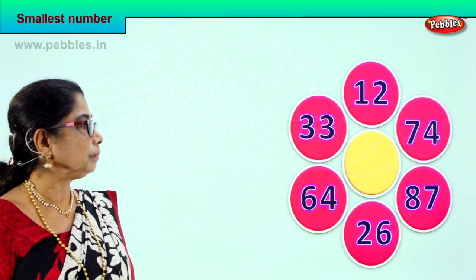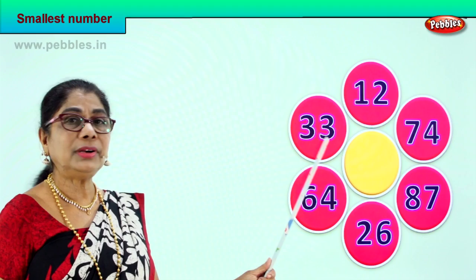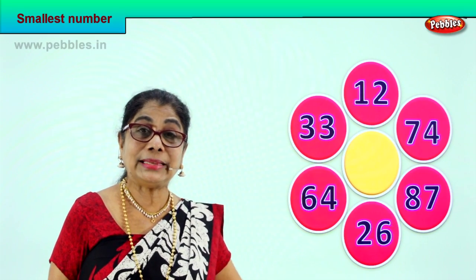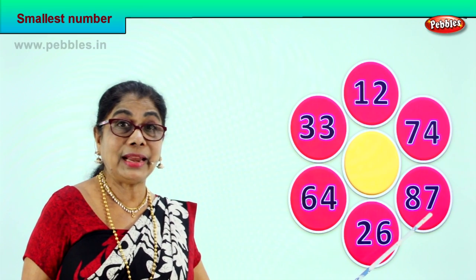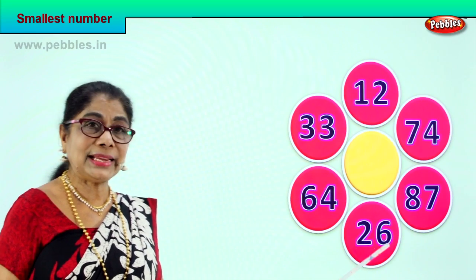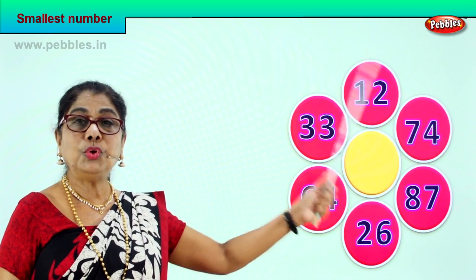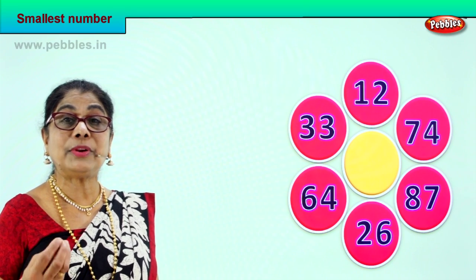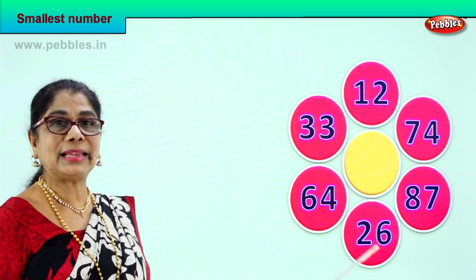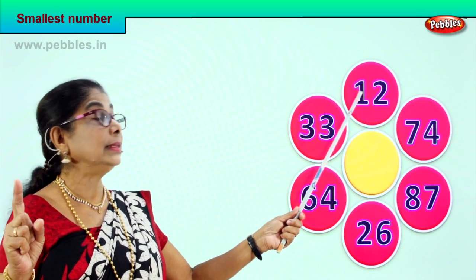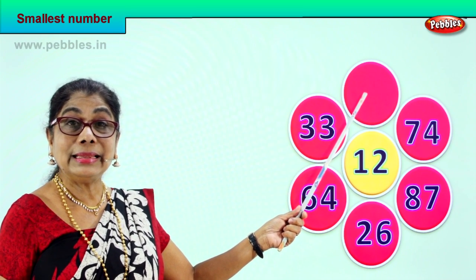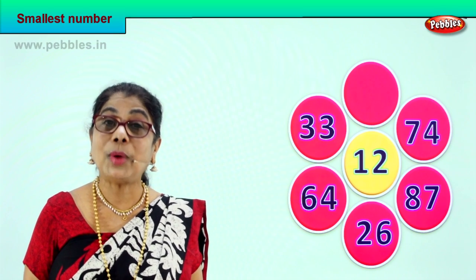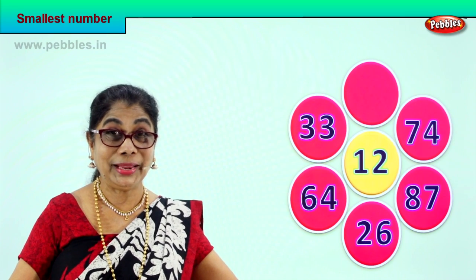Let's take another exercise. 33 has 3 tens, 12 has 1 ten, 74 has 7 tens, 87 has 8 tens, 26 has 2 tens, and 64 has 6 tens. Look at the tens place and see which number has the least tens. 26 has 2 tens, but 12 has only 1 ten — 1 ten and 2 ones. This is the smallest number. We take and put it in the middle — 12 is the smallest of all.